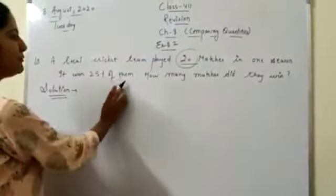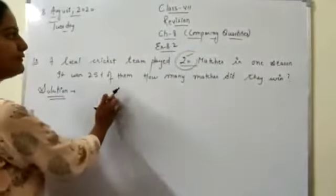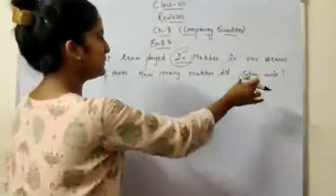It won 25% of them. Them means this 20. The cricket team won 25% of the total matches. How many matches did they win?